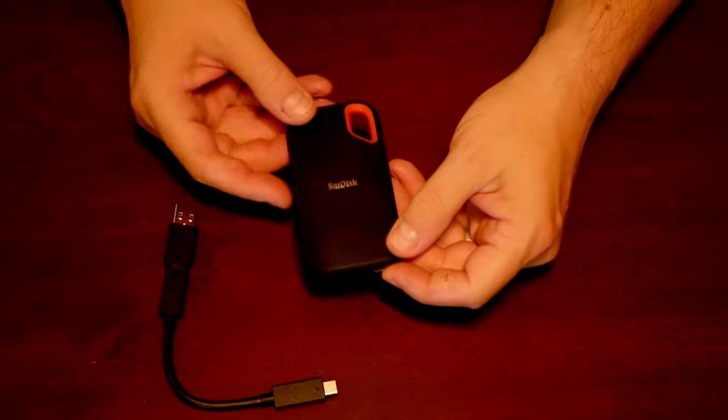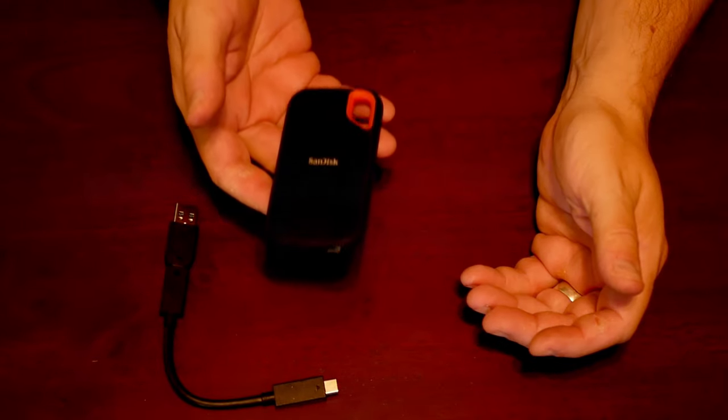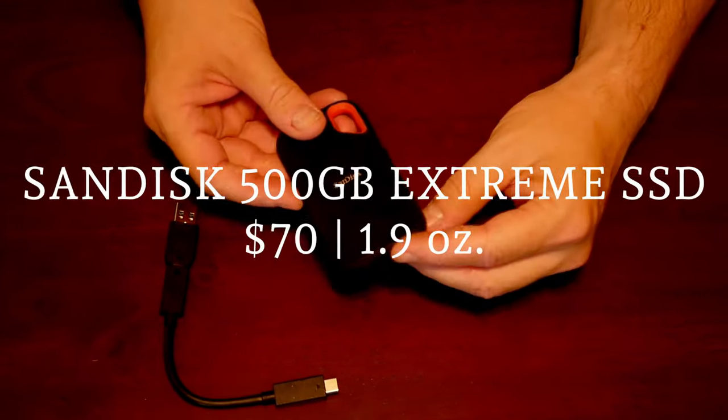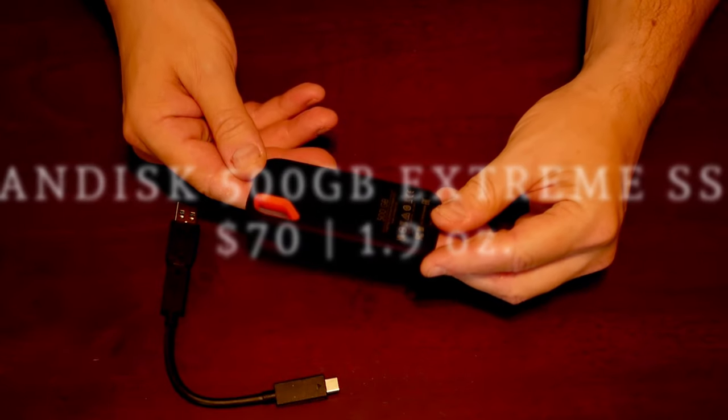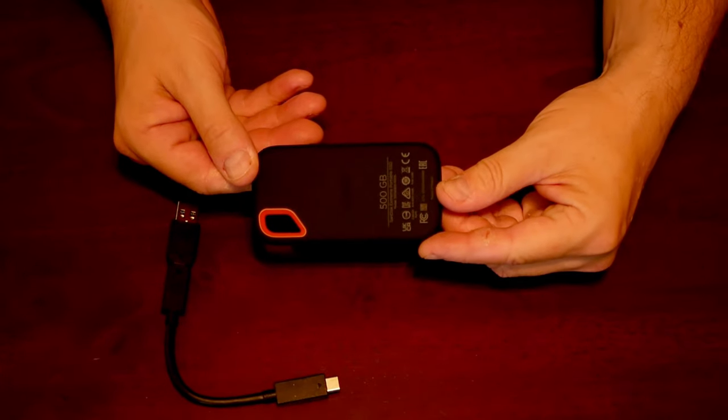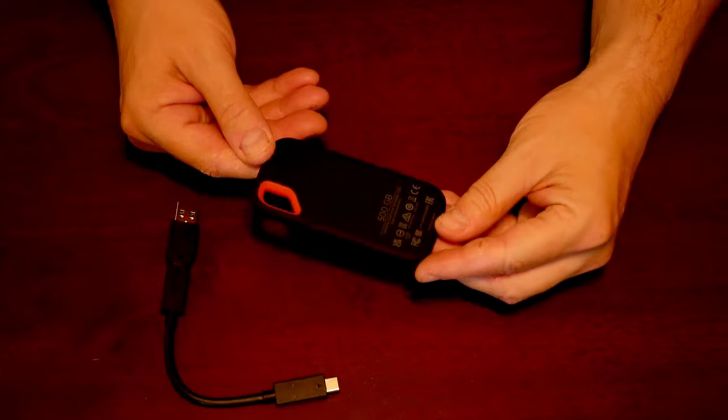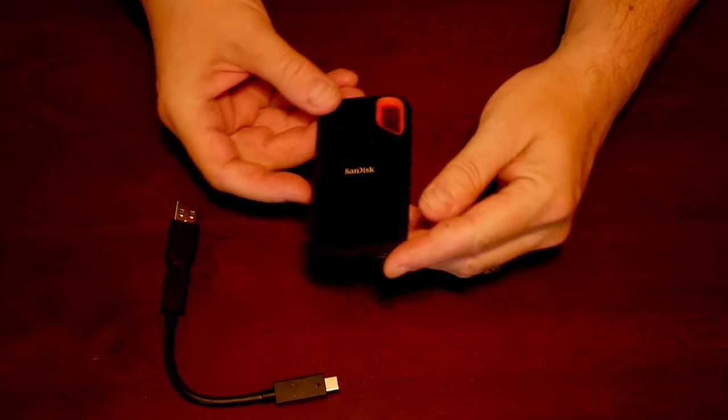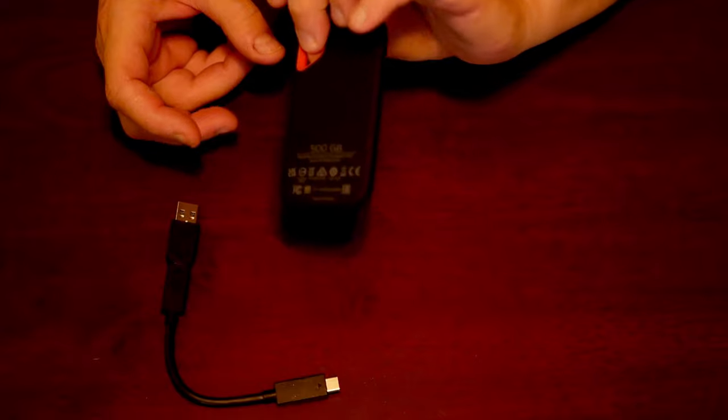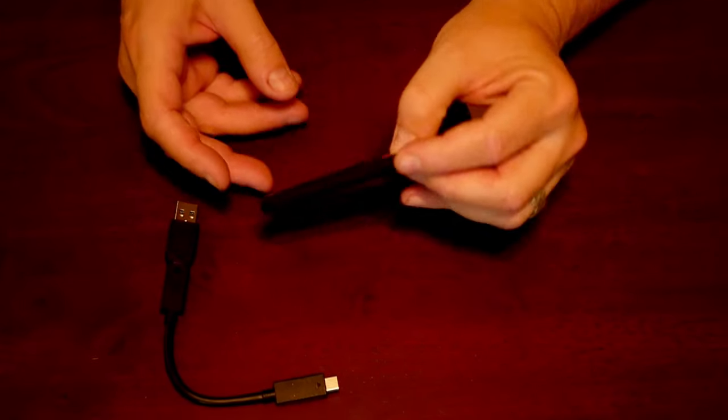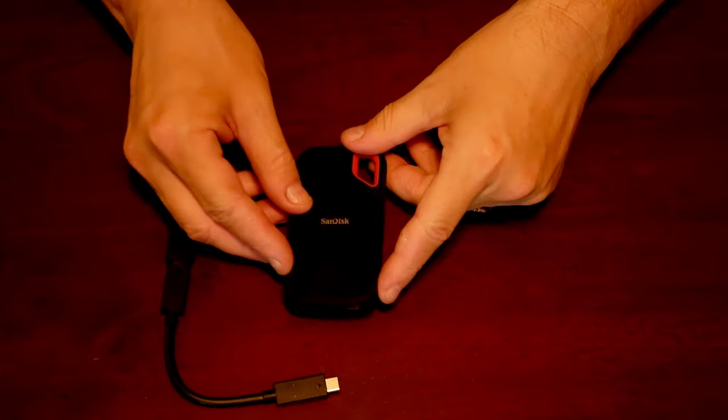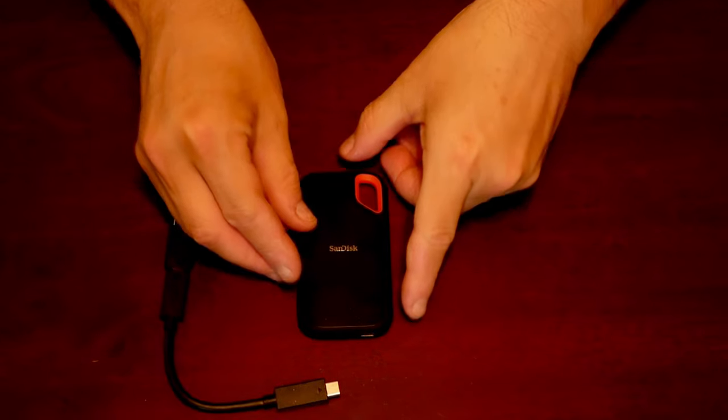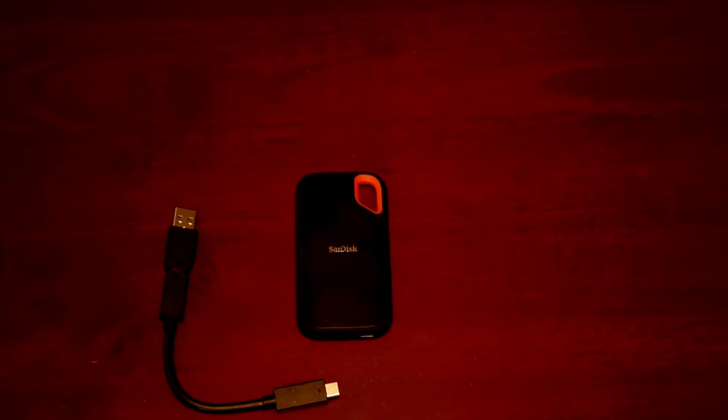In the other pouch, I've been carrying a portable USB drive. This is the SanDisk 500 gigabyte extreme. Being solid state, this drive weighs almost nothing, but this one is IP55 water and dust resistant. It can survive a two meter drop, and it comes standard with 256-bit AES hardware encryption, so if someone does steal this bag, they will not be able to access my files on the drive.